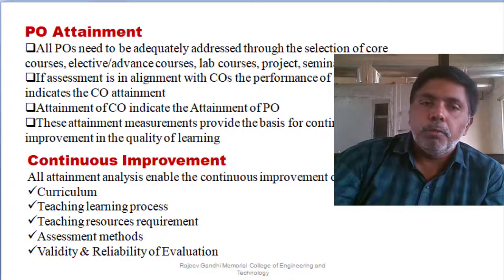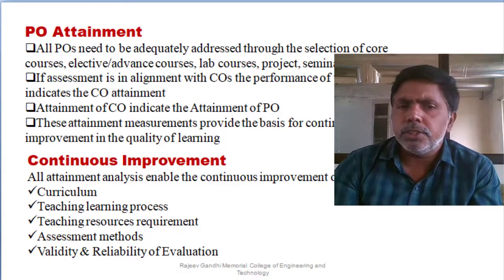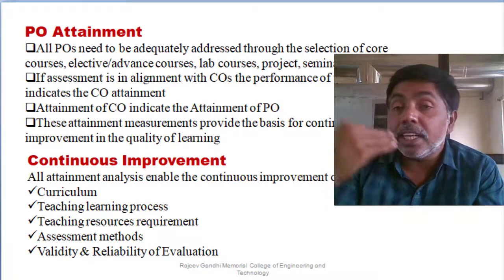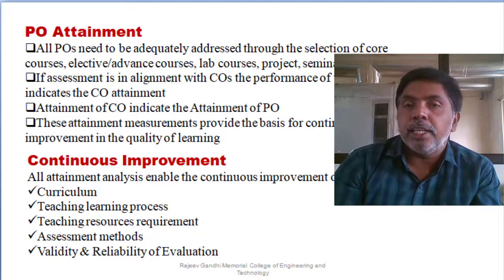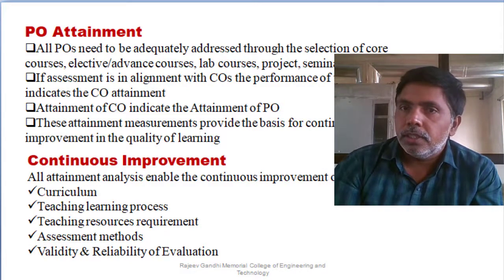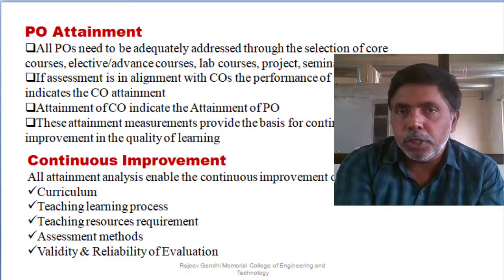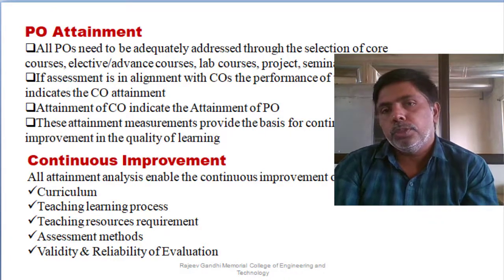For full attainment, continuous improvement is required. Based on attainment results, you improve the curriculum, the teaching-learning process, and teaching resource requirements. You also validate the reliability of the evaluation and assessment methods — changing the question bank if needed. Achieving consistency over two to three years demonstrates the validity and reliability of the evaluation process.